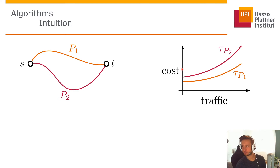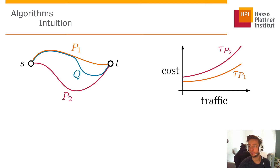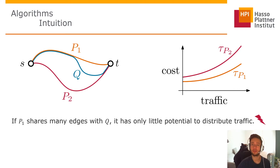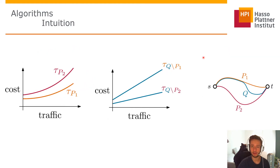One might think it would always be cheaper to choose P1. But depending on overlap with the original route Q, P1 may share many more edges with Q, leaving little potential for P1 to distribute traffic between P1 and Q. Because P2 is more disjoint to Q, it may be better to propose P2 so drivers can split up — counter-intuitive but we shouldn't discard P2 even though its cost function seems always more expensive.